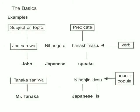Let's take a look at some examples. We begin with: John-san wa Nihongo wo hanashimasu — John, Japanese, speaks. In other words, John speaks Japanese. Our subject or topic is John-san wa, and our predicate is hanashimasu. This is also the verb of the sentence.